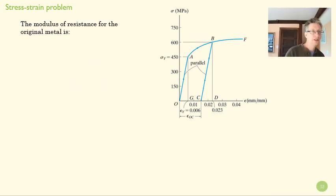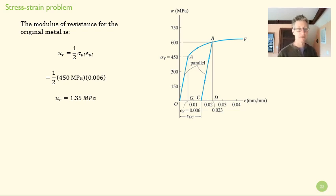The modulus of resistance for the original metal can be calculated with this value. And so we can go ahead and find that. The modulus of resistance is the area under this curve, right? And that tells us something about how much energy can be absorbed before we experience some plastic deformation.